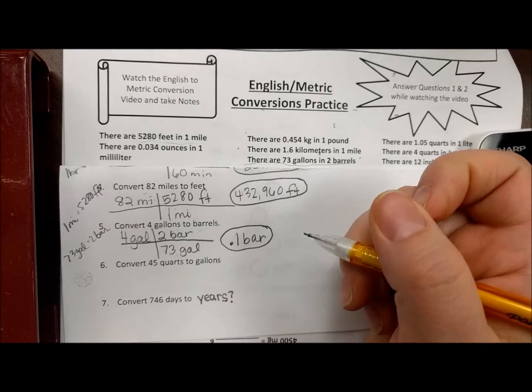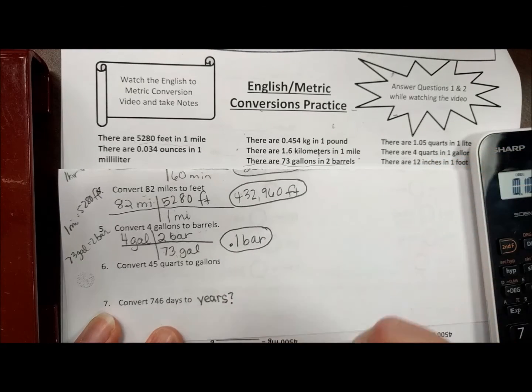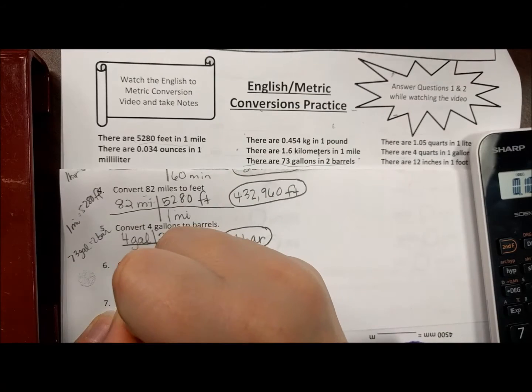Okay, number six: convert 45 quarts to gallons. So I'm going to write down what they give me.